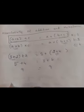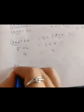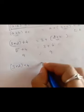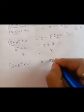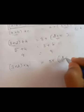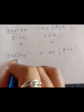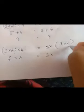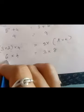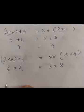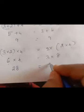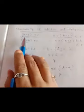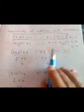For associative property of multiplication: three into two into four equals three into the bracket two into four. Left side: three into two equals six, six into four equals twenty four. Right side: two into four equals eight, three into eight equals twenty four. Both sides give twenty four. The brackets alone have changed but the answer remains the same. This is associative of multiplication.